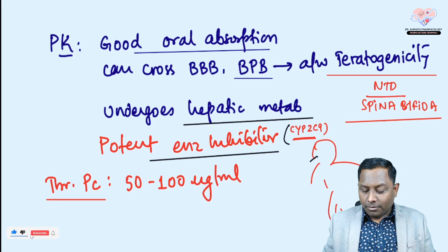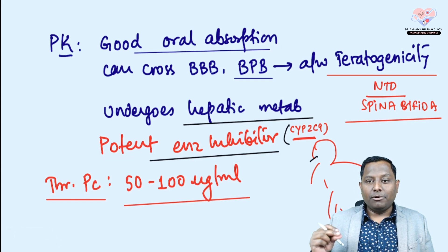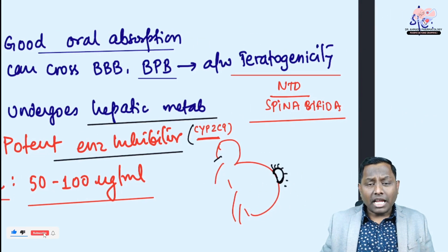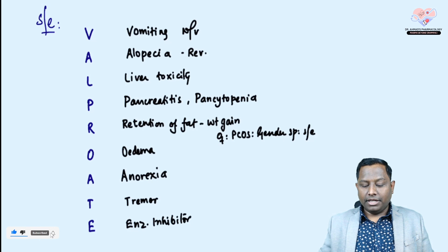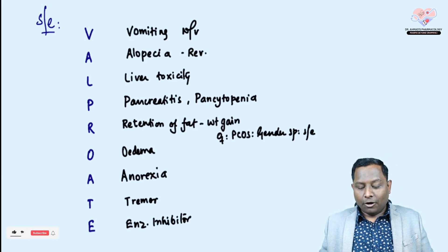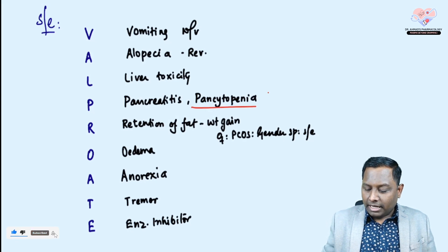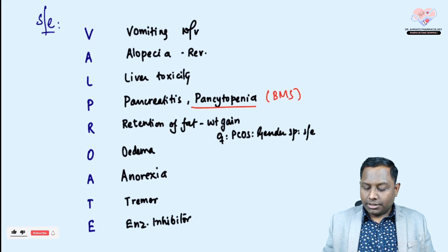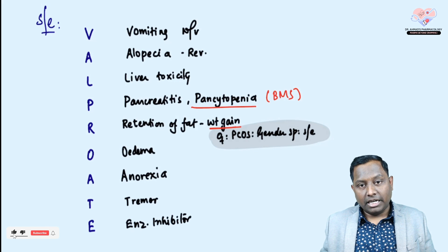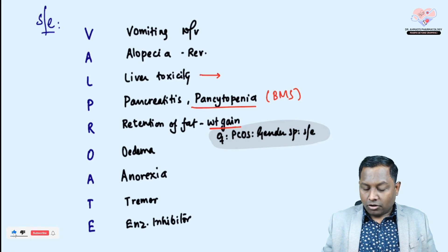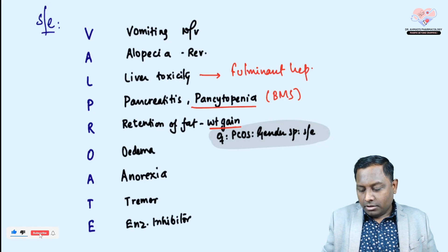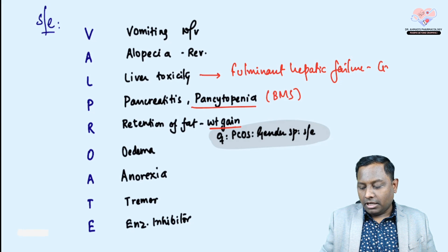The therapeutic plasma concentration of valproate is 50 to 100 (some texts like Goodman & Gilman cite 30 to 100, but 50 to 100 is the commonly used range). The side effects of valproate can be remembered by the mnemonic 'VALPROET': Vomiting, Alopecia, Liver toxicity, Pancreatitis, Pancytopenia (bone marrow suppression), Retention of fat causing weight gain (leading to polycystic ovarian syndrome in females), Edema, Anorexia, Tremor — and potent enzyme inhibiting property. Liver toxicity can progress to fulminant hepatic failure, which is a very grave side effect.